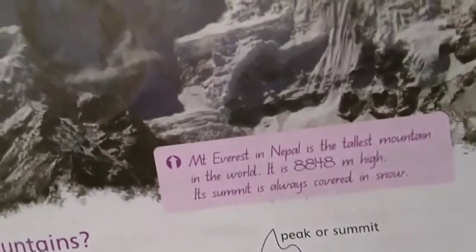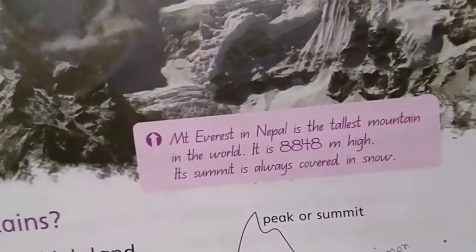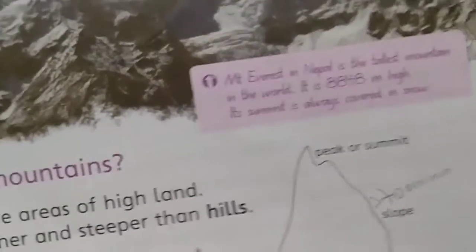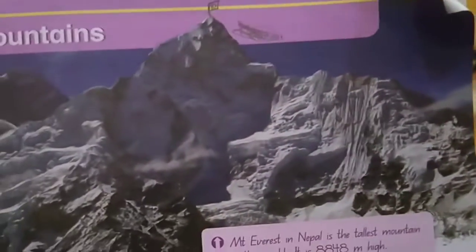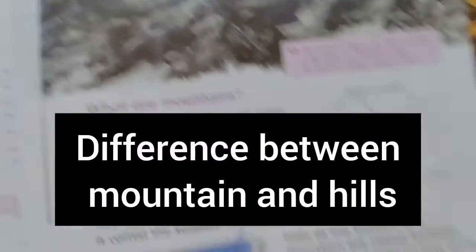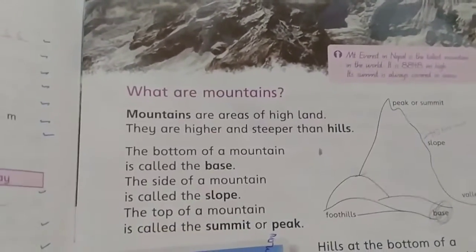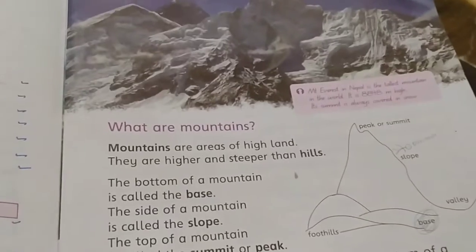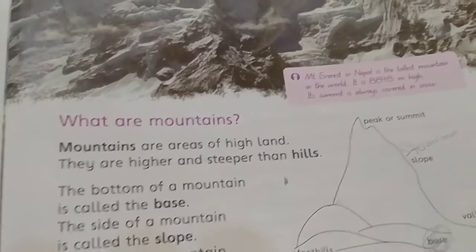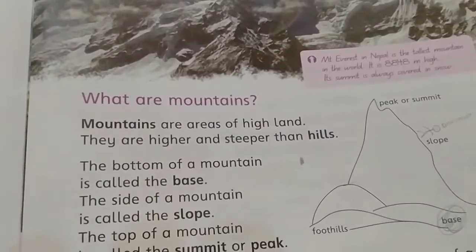The summit of Mount Everest is always covered in snow. What is the difference between mountains and hills? Mountains are higher and steeper than hills.